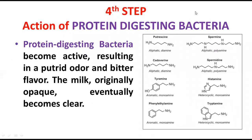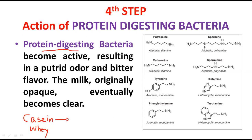The fourth and last step is the action of protein-digesting bacteria. We know that milk contains proteins — casein and whey proteins. As the pH gradually increases, protein-digesting bacteria start their action. They perform proteolysis, degrading these proteins and producing amino acids as well as ammonia (NH3).